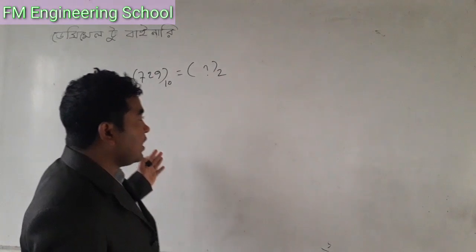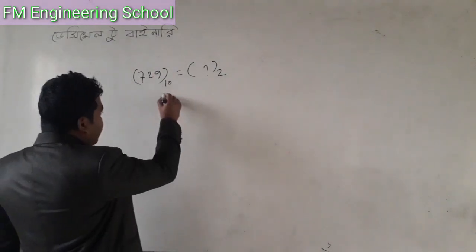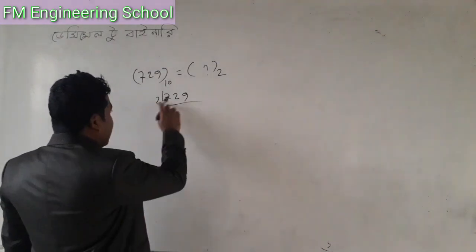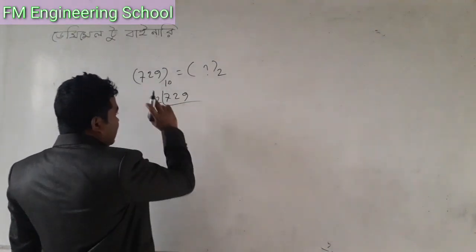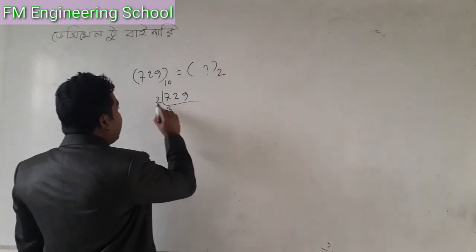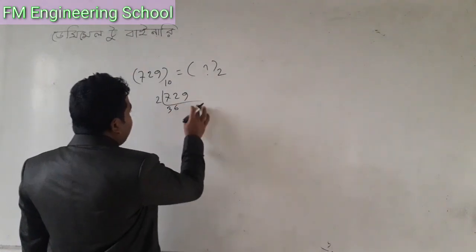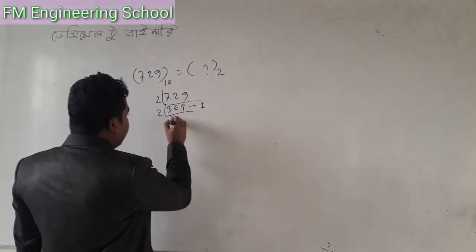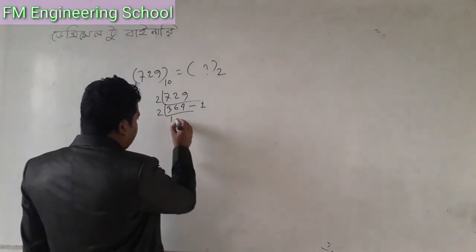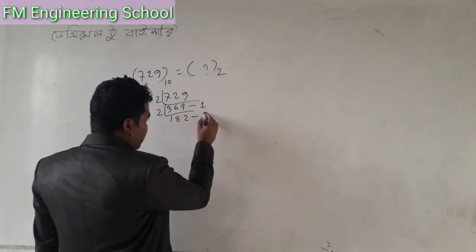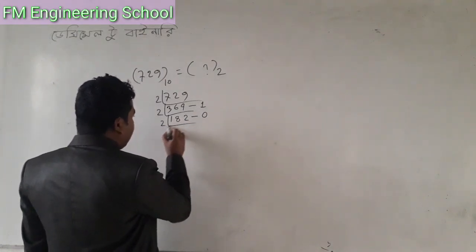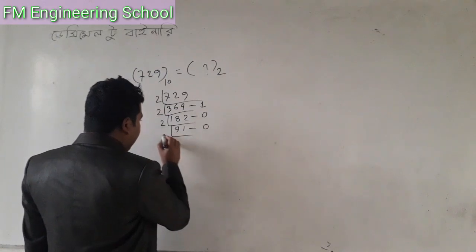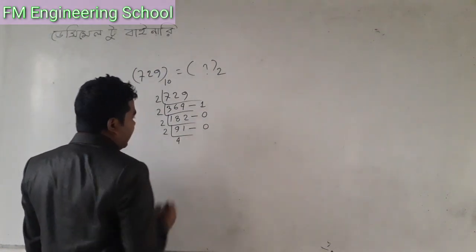We divide by 2 to find the remainders. The remainders give us the binary digits. Again, we have to find values by dividing by 2. Here we have the chips: 4 and 0.